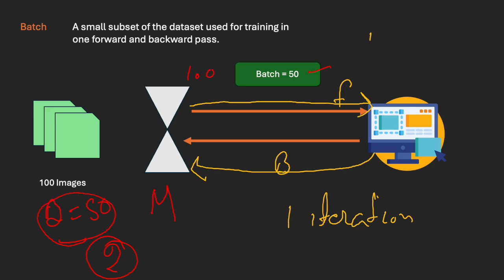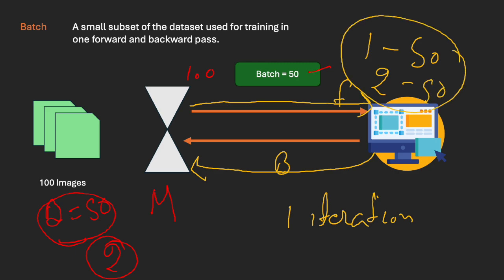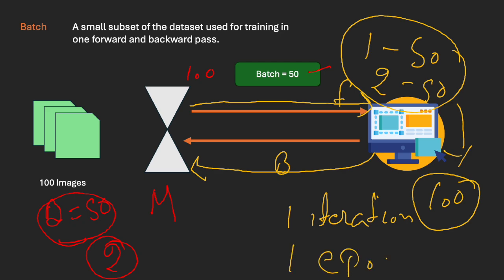To pass all 100 images, how many iterations do we need? We need two iterations — in one iteration we send 50 images, in the second iteration we send another 50 images. When we complete both iterations and cover all 100 images, we call it one epoch. By definition, epoch is one complete pass through the entire training dataset.